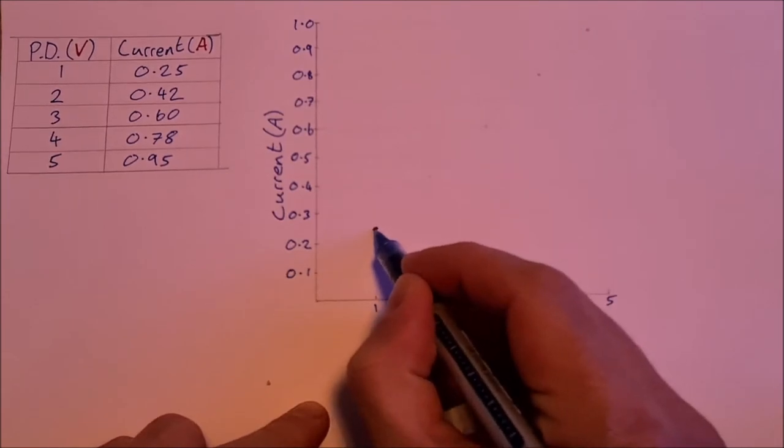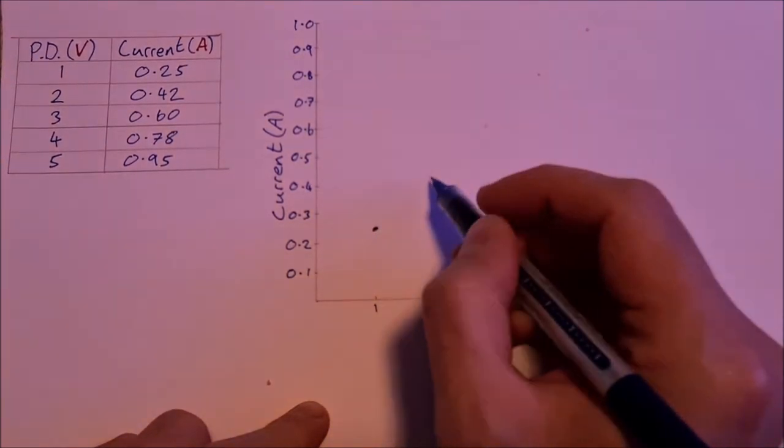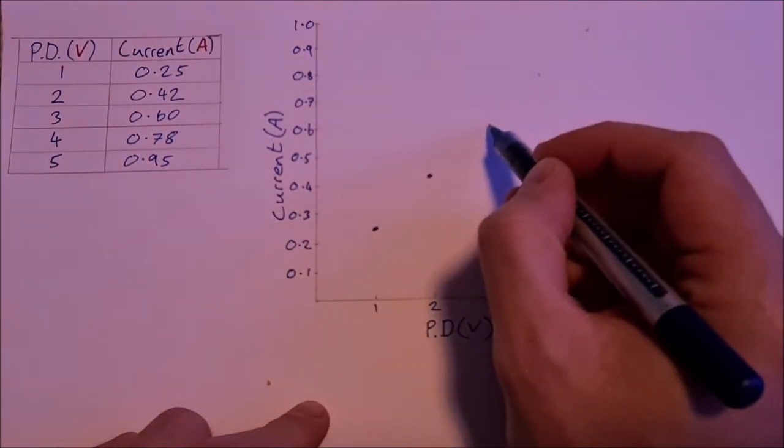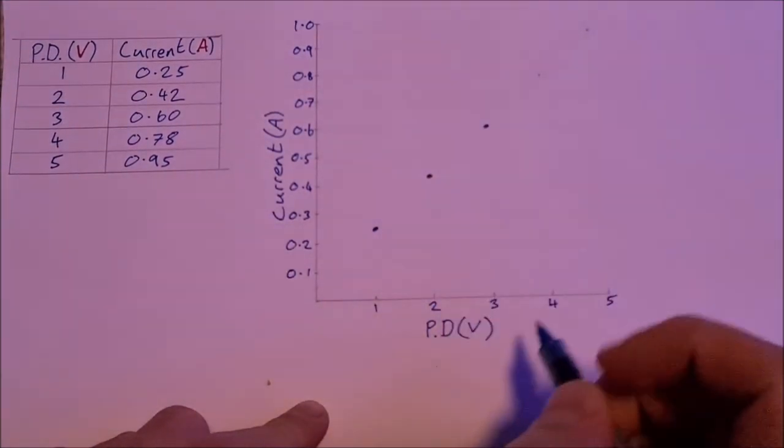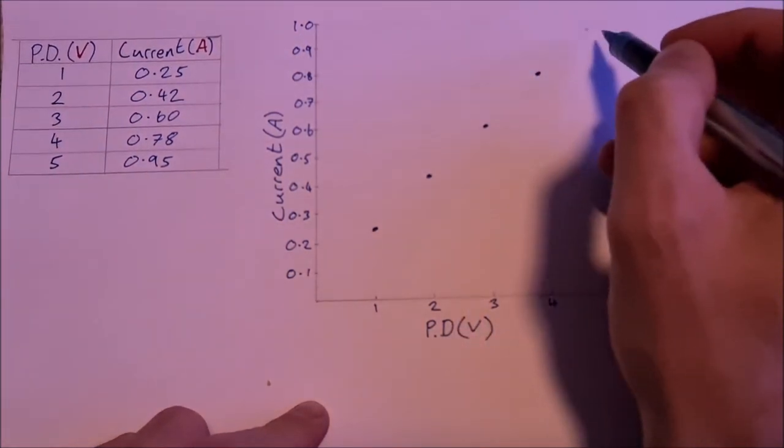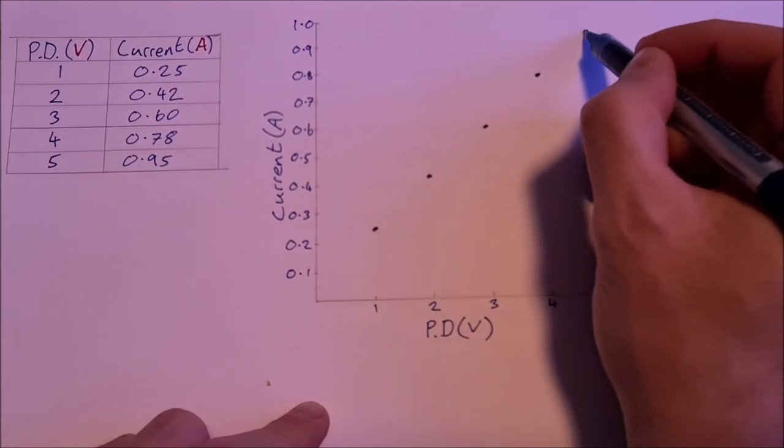So one volt and 0.25 amps, two volts 0.42 amps, three volts was 0.6 amps, four volts was 0.78 amps, and then five volts was 0.95 amps.